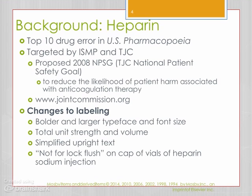Heparin has been found to be one of the top ten drug errors. So in 2008, the National Patient Safety Goal was to reduce the likelihood of patient harm associated with anticoagulation medication. They made changes to the labeling — labels were made bolder and larger, font size was increased, the total unit strength and volume were more easily readable, the text was simplified, and 'Not for Lock Flush' was placed on the cap of heparin vials to help prevent errors.